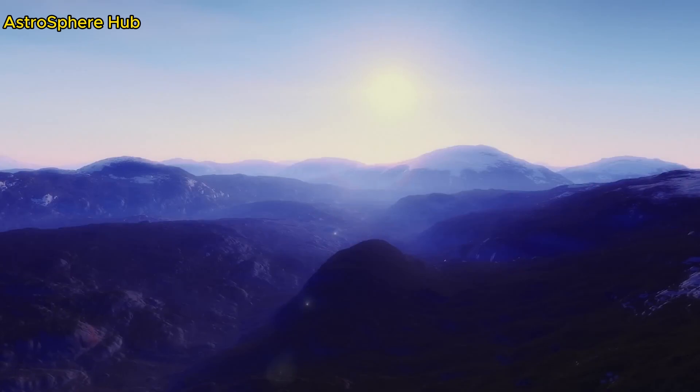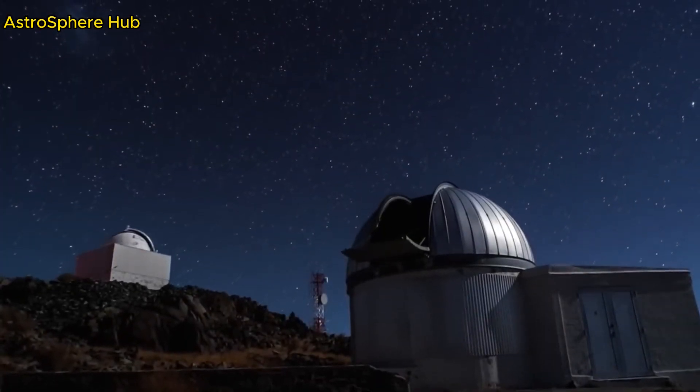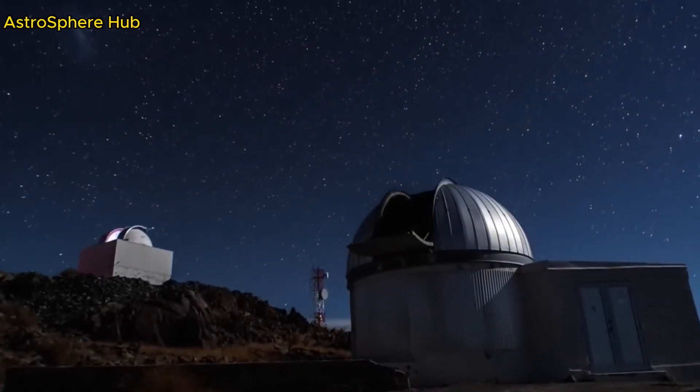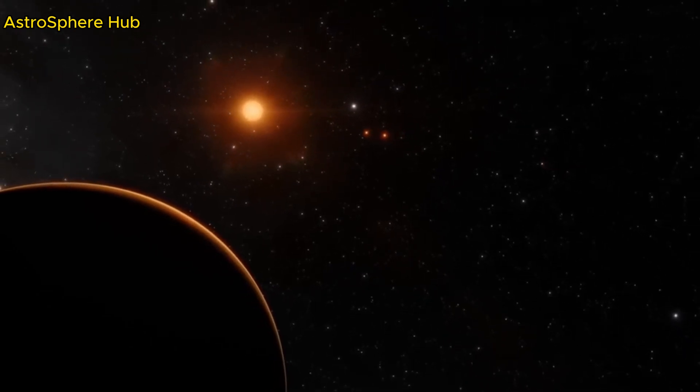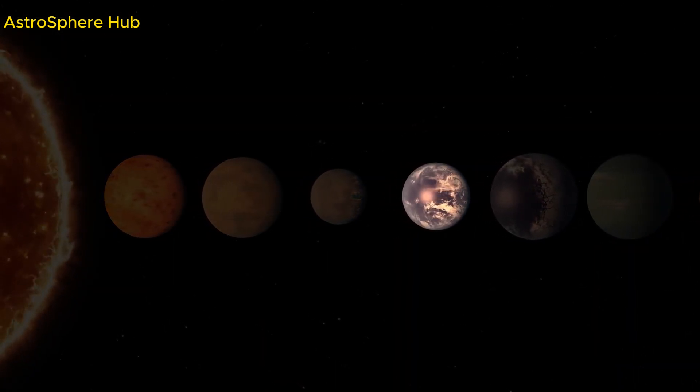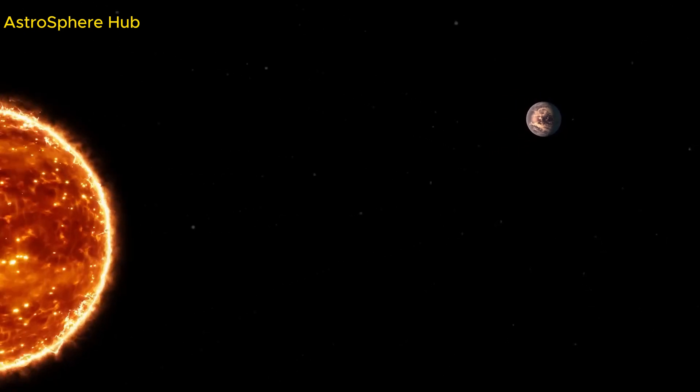Although data shows TRAPPIST-1 is a much safer host star, its flares are about 30 times milder than those seen in other red dwarfs. But since the seven planets in the TRAPPIST-1 system are tightly packed, the effects would be noticeable.